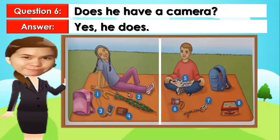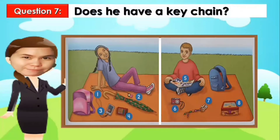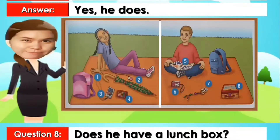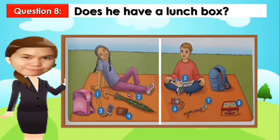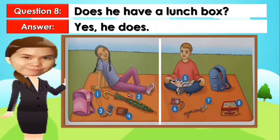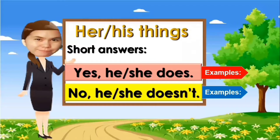Next, does he have a keychain? The answer is yes, he does. Next, does he have a lunchbox? The answer is yes, he does. Now let's proceed with the examples using 'no he doesn't' or 'no she doesn't.'